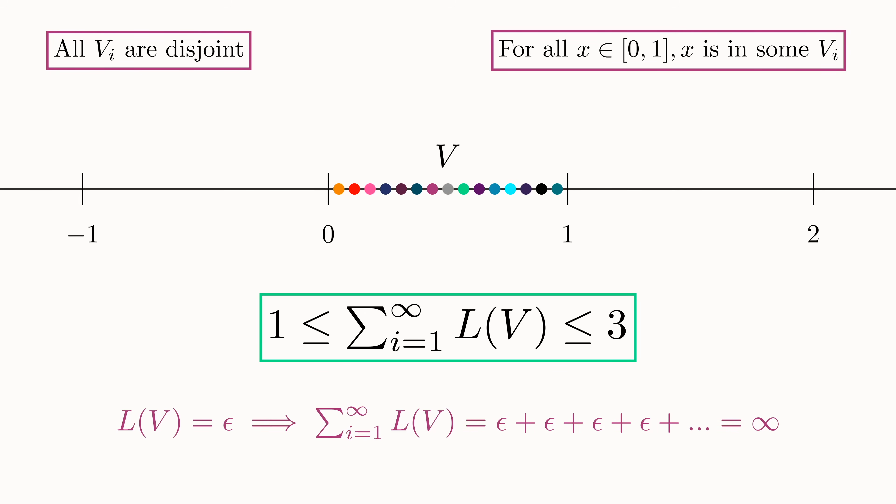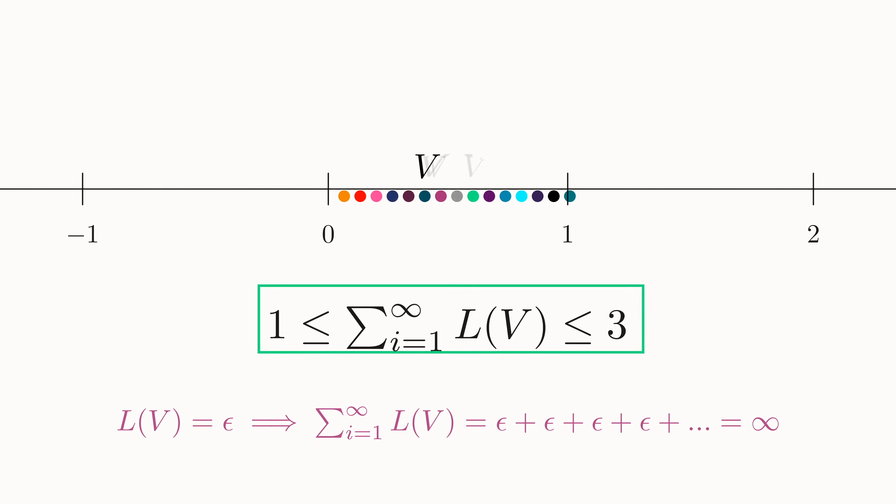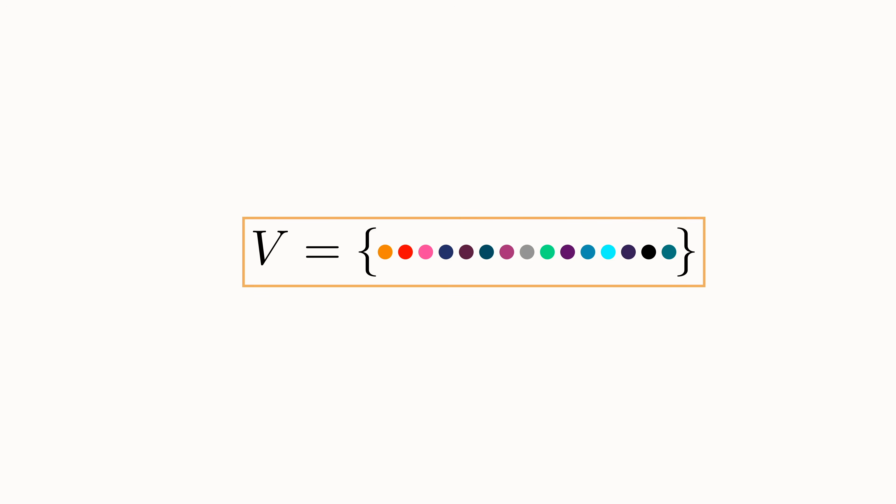If it had any size, it would always result in a logical contradiction. So the set V is the answer to Lebesgue's much more interesting question. It is fundamentally non-measurable.